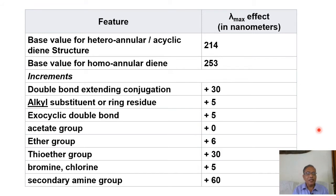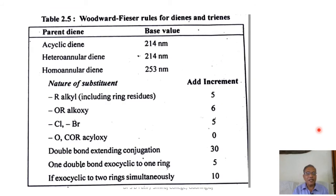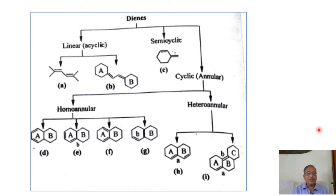Along with base structures like heteroannular dienes, cyclic dienes, and homoannular dienes, they have given some incremental values for additional structural aspects. In the earlier lecture we saw these values for acyclic dienes, heteroannular dienes, homoannular dienes, and increments for specific groups like alkyl, alkoxy, halogen, etc.